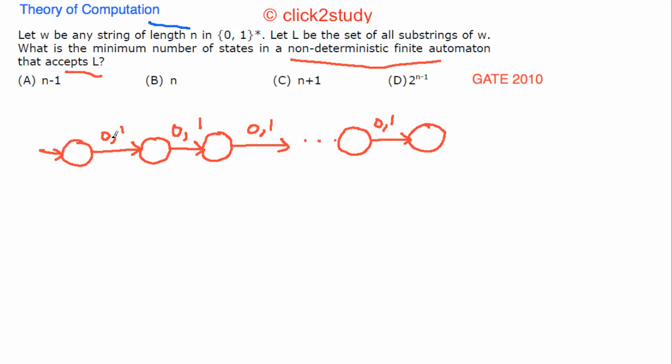What you can do is you can give them numbers: 0, 1, 2, and so on. Up till here the length is 1, up till here the length is 2, up till here the length is n minus 1, up till here the length is n.